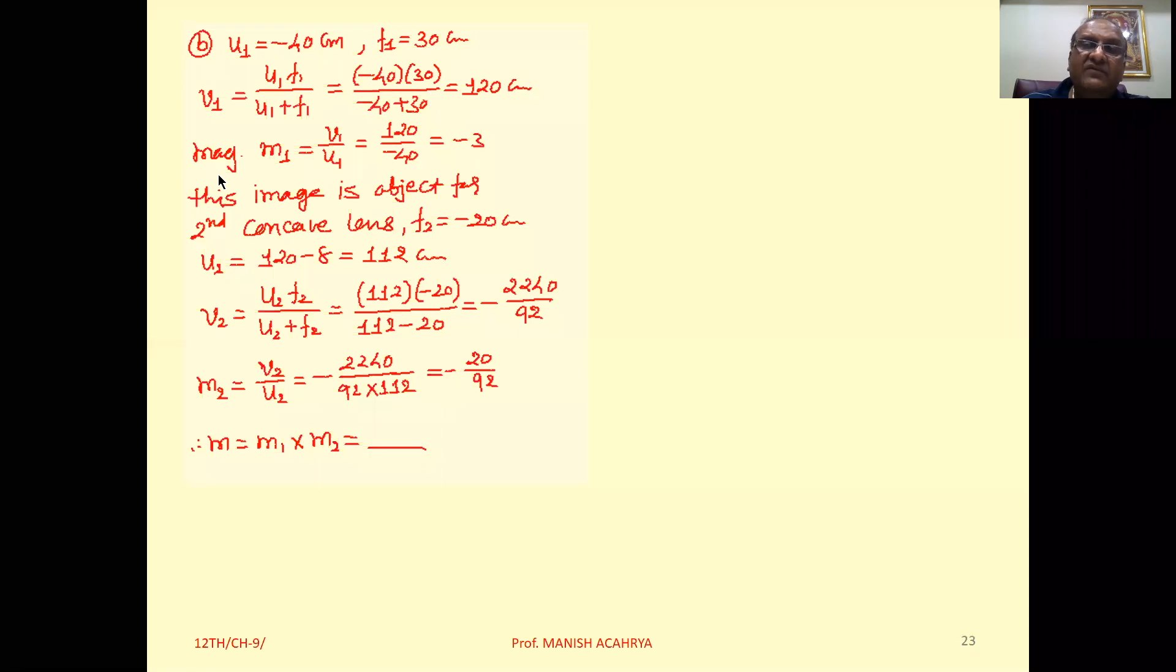Now magnification by the first convex lens, M1 equals V1 by U1, which is 120 upon minus 40 equals minus 3. The image formed at 120 will behave as an object for the concave lens. 120 is positive, meaning the object is on the opposite side. The distance from convex to concave is 8 centimeter.